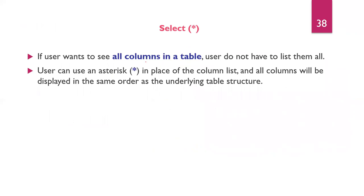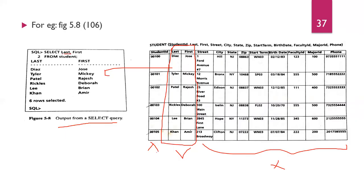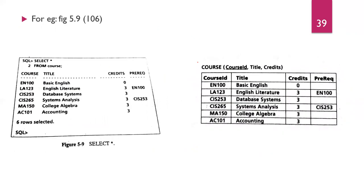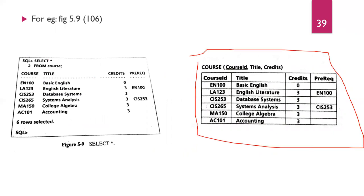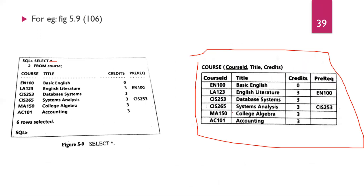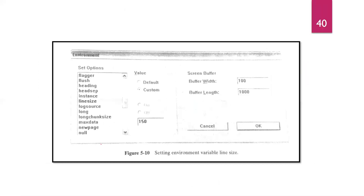If a user wants to see all the columns in a table, you use the asterisk (*) symbol: SELECT * FROM table_name. For example, SELECT * FROM course retrieves all four columns of the course table — course ID, title, provided, and prerequisite. By default, the line size is 150. If all columns are retrieved, the lines are displayed accordingly so you can view all the columns.